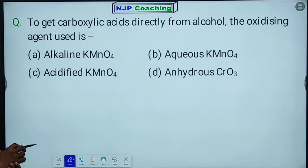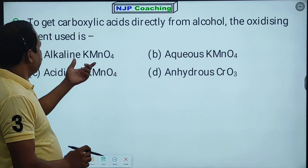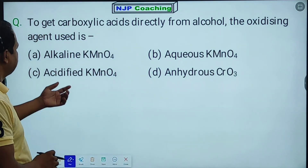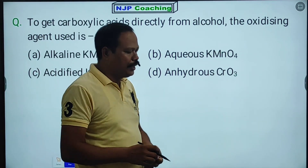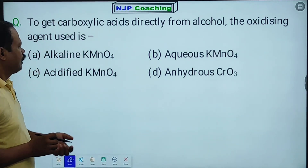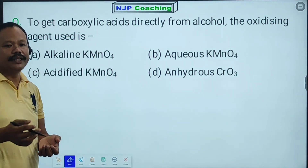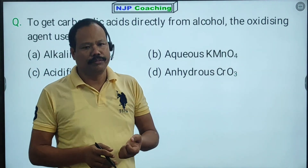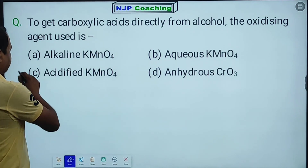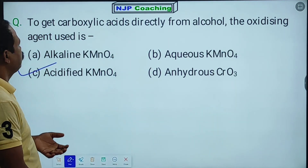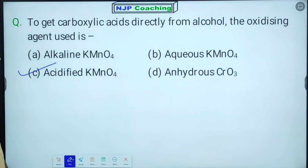To get carboxylic acids directly from alcohol, what oxidizing agent is used? The options include alkaline KMnO4, aqueous KMnO4, anhydrous CrO3, and acidified KMnO4. Acidified KMnO4 is the oxidizing agent used to convert alcohol directly to carboxylic acid.